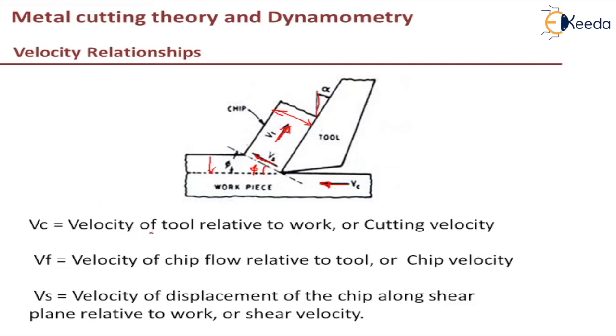So as you can see here, Vc is represented as velocity of tool relative to work or cutting velocity, Vf is chip velocity and Vs is the velocity of displacement of chip along the shear plane or the shear velocity.